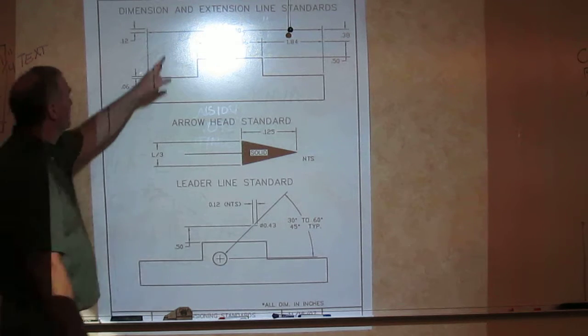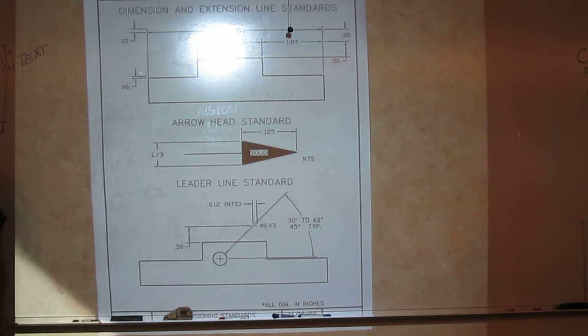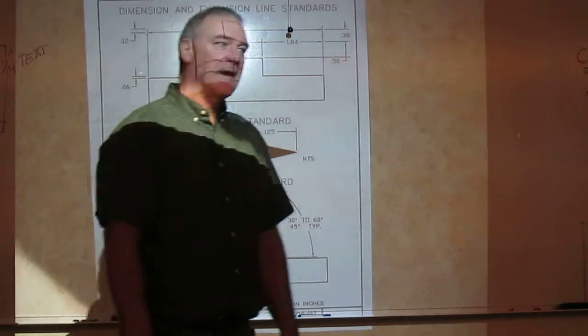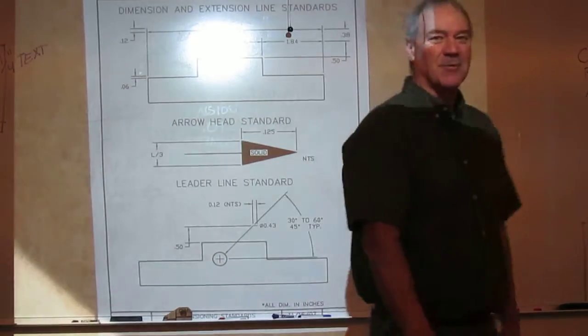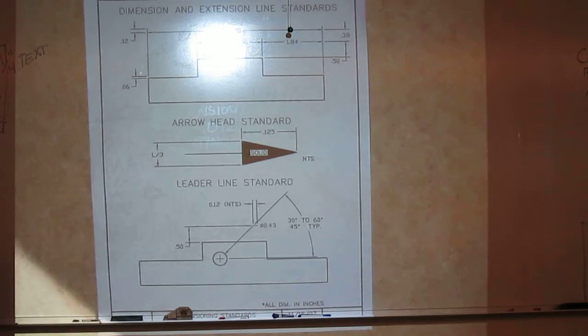So extension line used to tie the dimension to a feature. The dimension line, shown here, what's it used for? It is used to show the extent of the information. And to show the information or numbers, whatever you want to call it. It's not always numbers. Sometimes it's text.